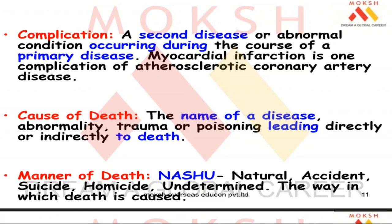Another term is complication — when you already have one disease and then get a second disease occurring during the course of the primary disease. For example, a coronary artery can develop atherosclerosis — deposition of oxidized low-density lipoprotein cholesterol in the intimal layer of the coronary artery. This is already a pathology impairing your life. Then one fine day during the course of that atherosclerotic coronary artery disease, you get a myocardial infarction — a heart attack. That myocardial infarction is a complication.